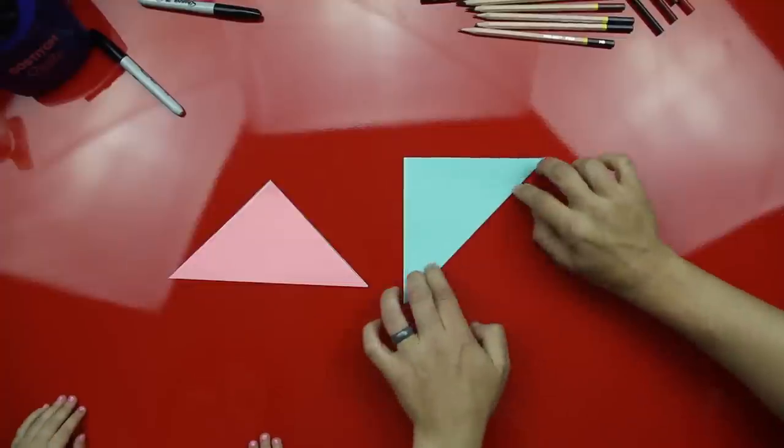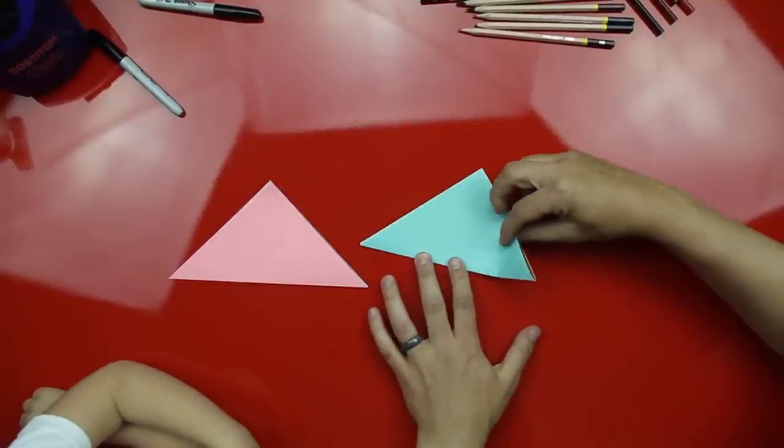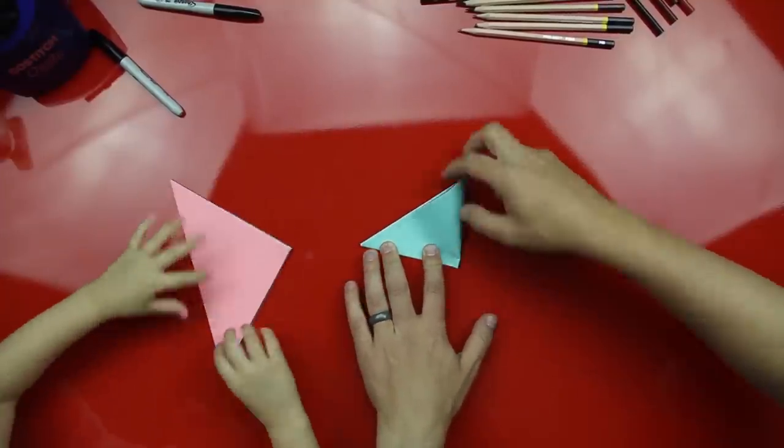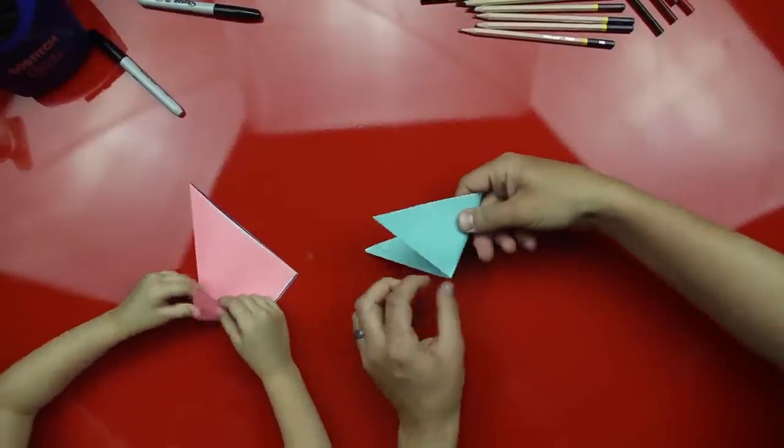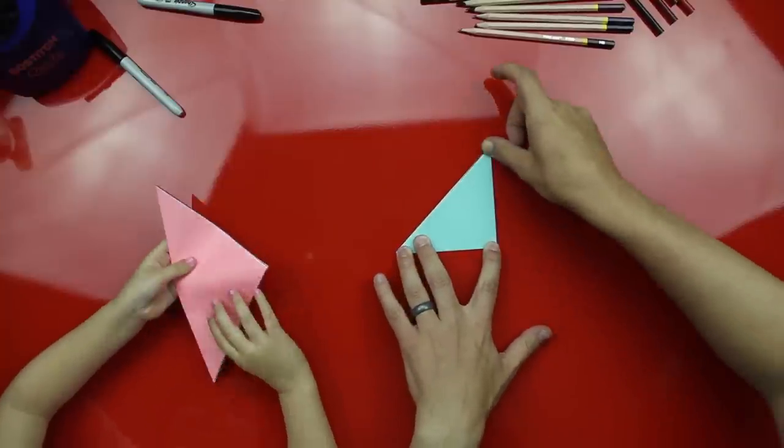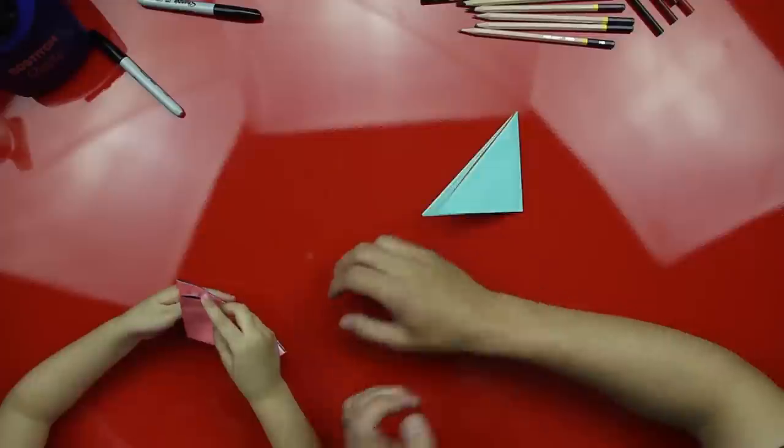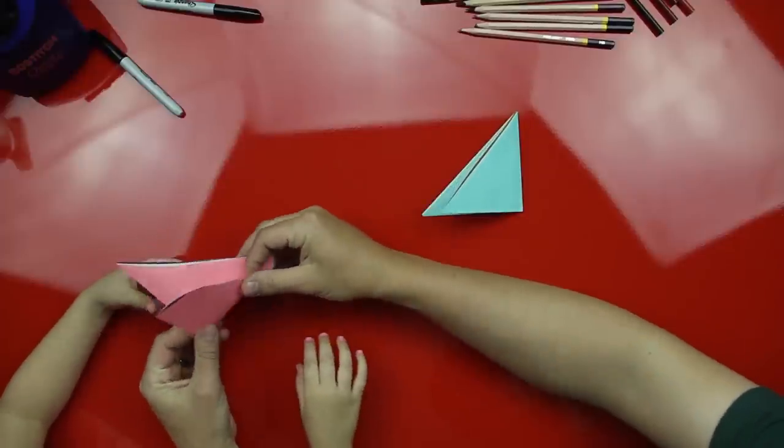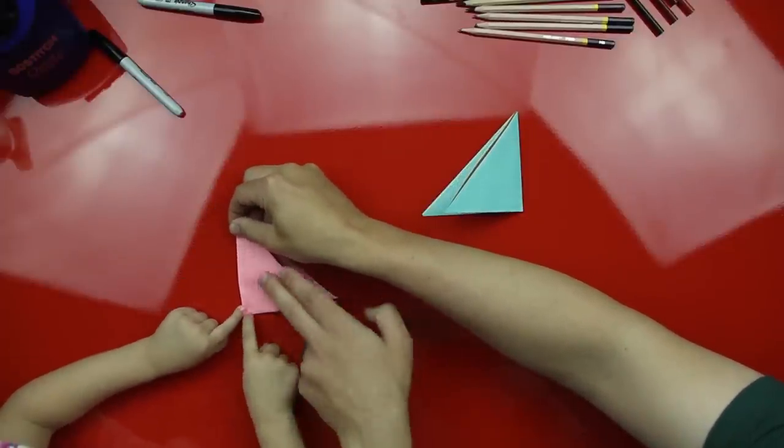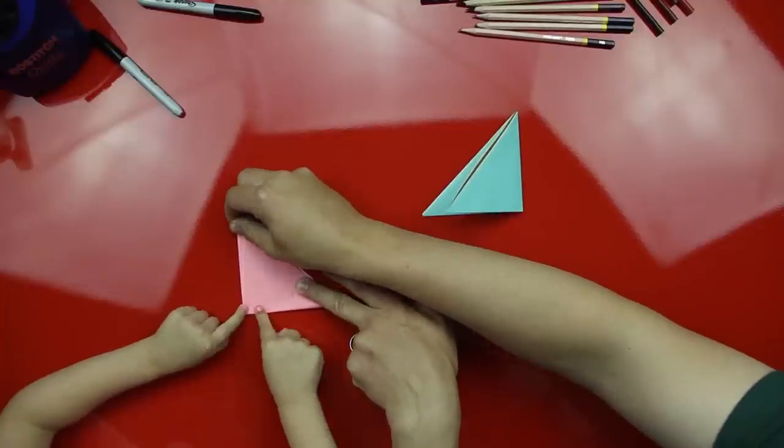Okay, now we're gonna fold it one more time. So this corner goes all the way over to the other corner and then we crease that one. Can you do that? Good job. Help you a little bit. I'll hold it and then you crease it. Good job.